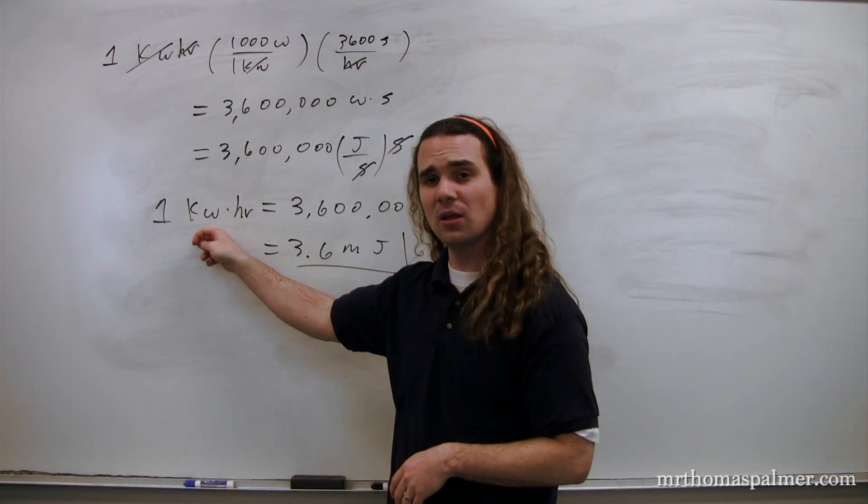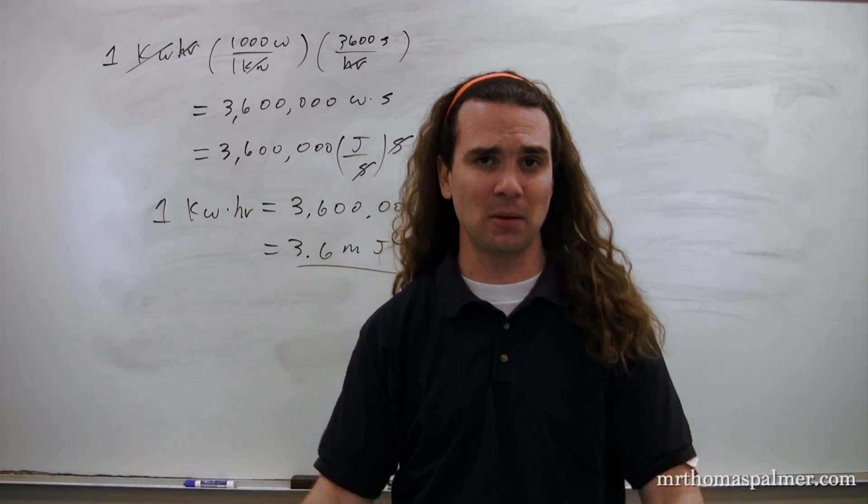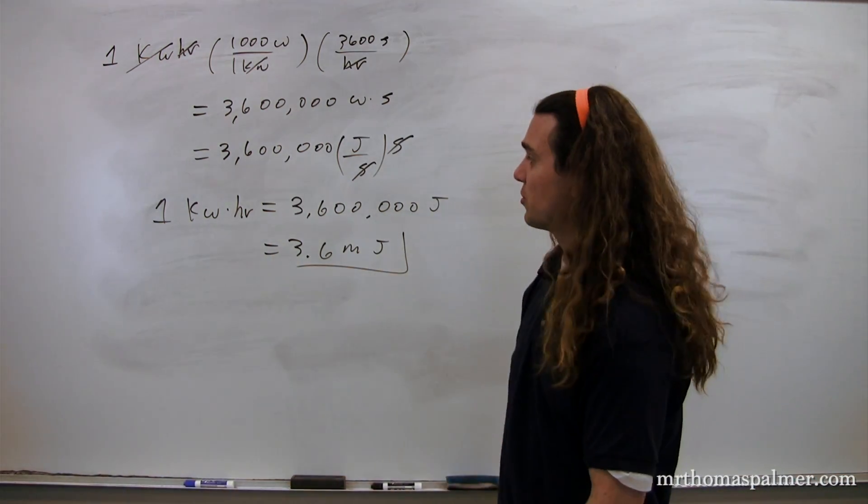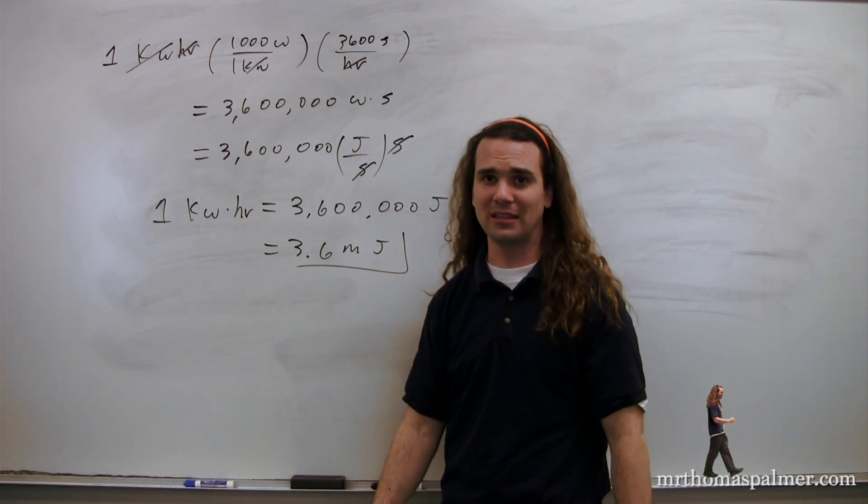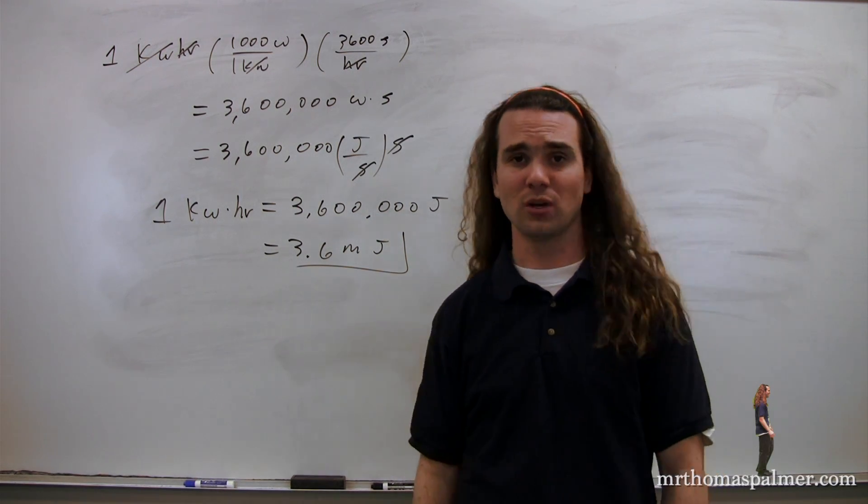So, one kilowatt hour is 3.6 megajoules. It's just a term that people use to define an amount of energy. And it's important that you understand that this is a conversion you have to be able to do. Nowhere is this conversion going to be given to you. Instead, you actually have to be able to do this conversion. Any time that you are going to use this, you would have to prove it. It's a relatively simple proof, but it is an important one. You do need to make sure that you do this. Got it.